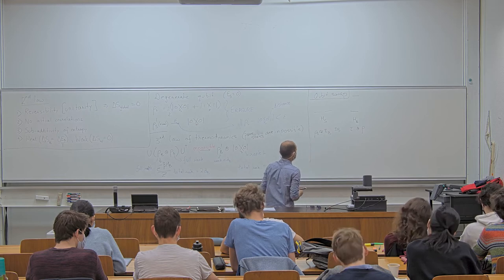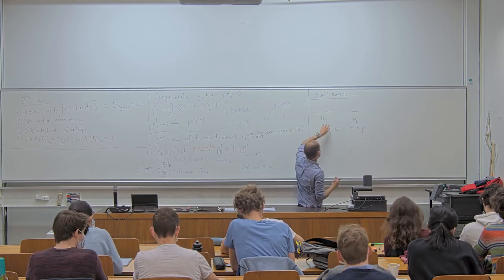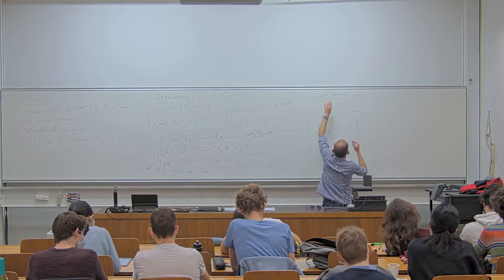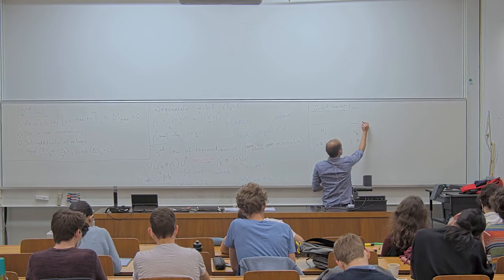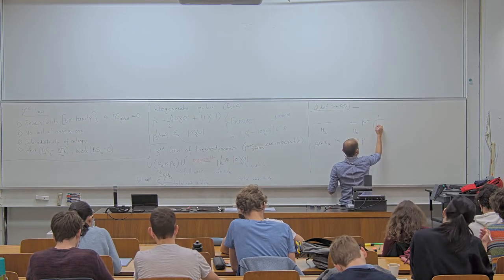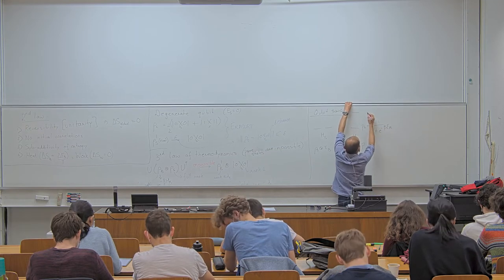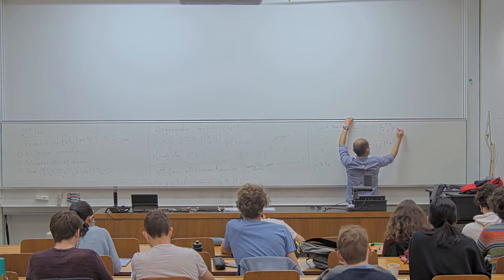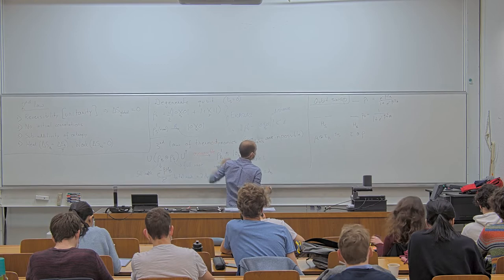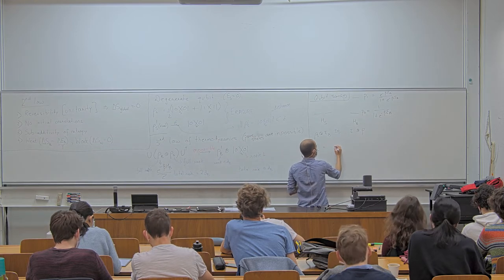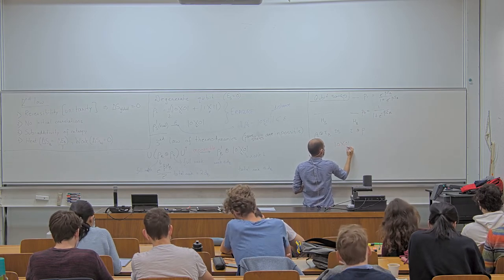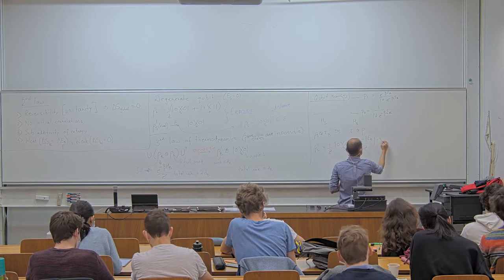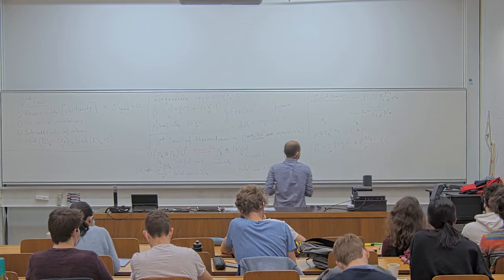From the qubit swap, whatever state the bath was in is now on the system. The ground state population of the bath's thermal state is 1/(1 + e^{-βE_b}), and the excited state population is e^{-βE_b}/(1 + e^{-βE_b}). So I've gone from a maximally mixed state to a state with population (1/Z)|0⟩⟨0| + (e^{-βE_b}/Z)|1⟩⟨1| on the system. This is partial erasure.